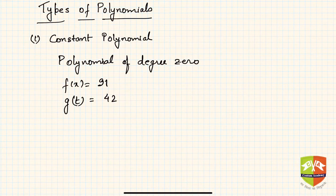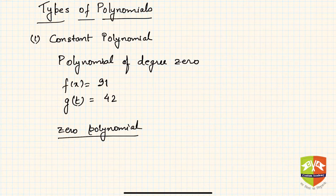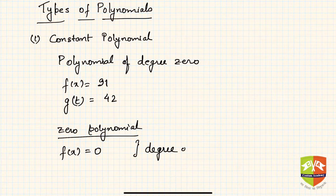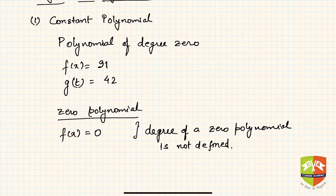There is one concept called the zero polynomial. Within constant polynomials, if the value is zero, it's called a zero polynomial — that is, f(x) = 0. The degree of a zero polynomial is not defined.